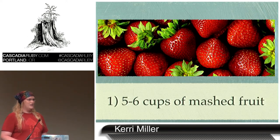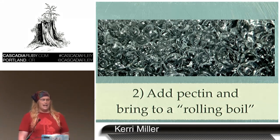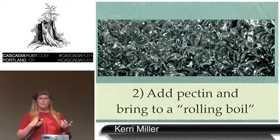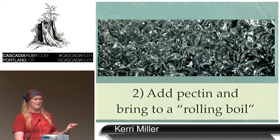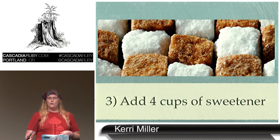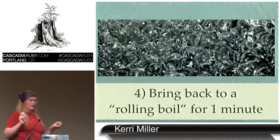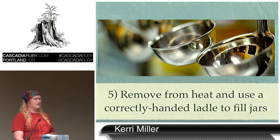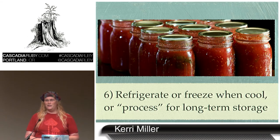I want to teach you all how to make a batch of jam. First, take five to six cups of mashed fruit — usually starts out about 10 cups, you smoosh it around and get some liquid in there. Put it in a big pot, add some pectin out of a box — that's a standard measurement, one box. Bring it to a rolling boil. A rolling boil is when liquid is boiling and you stir it and the boiling does not stop. This is also really hot — hotter than water at this point and sticky, so be careful.